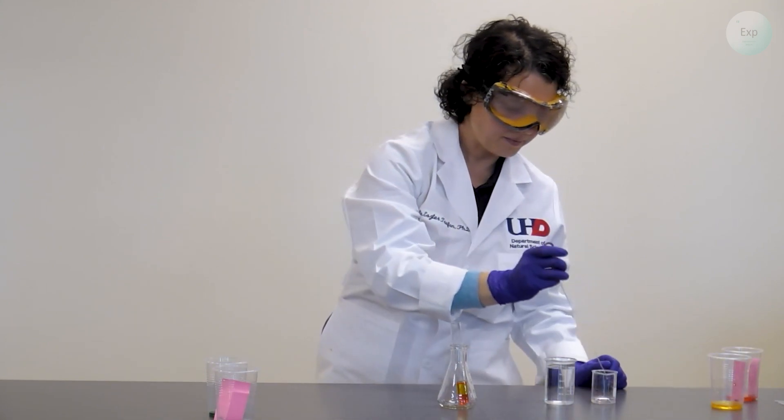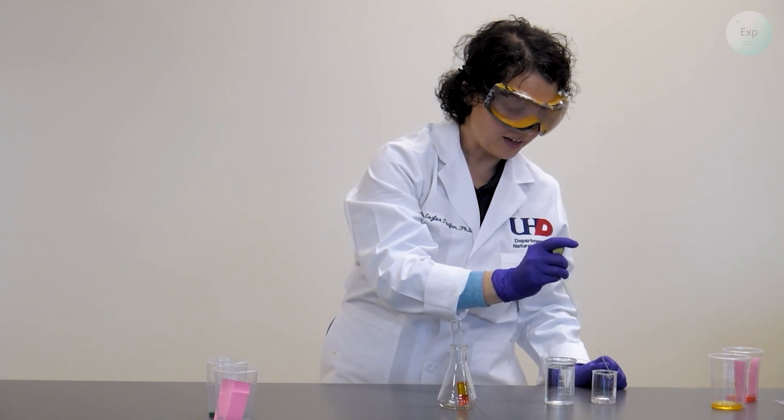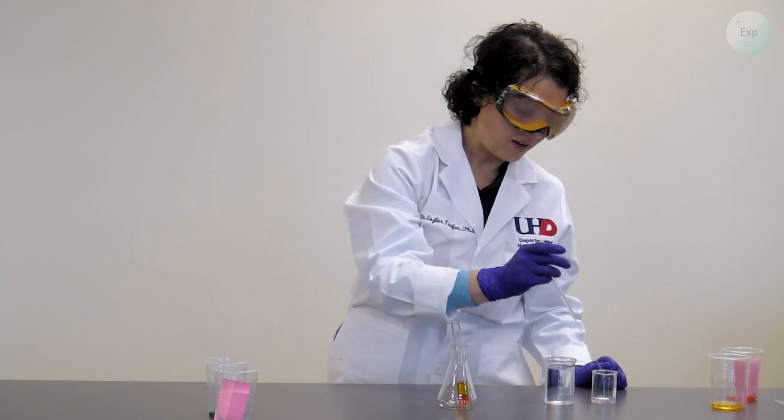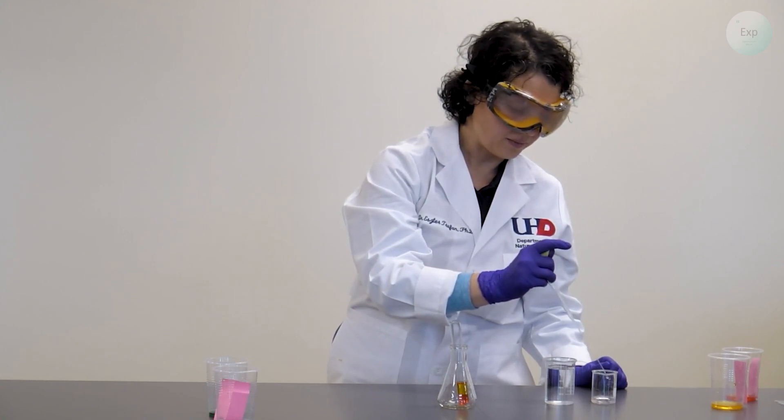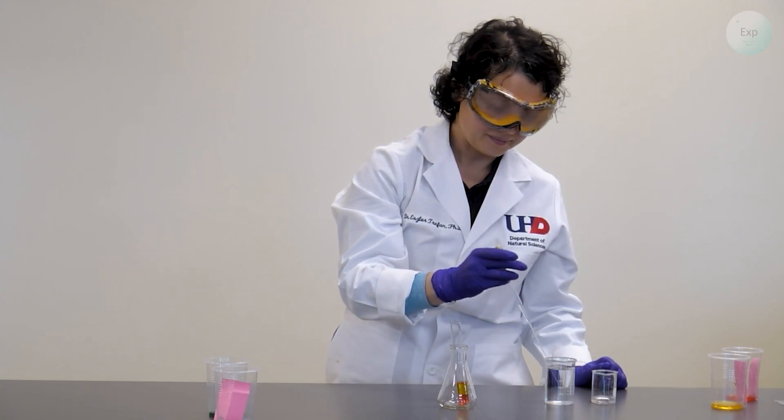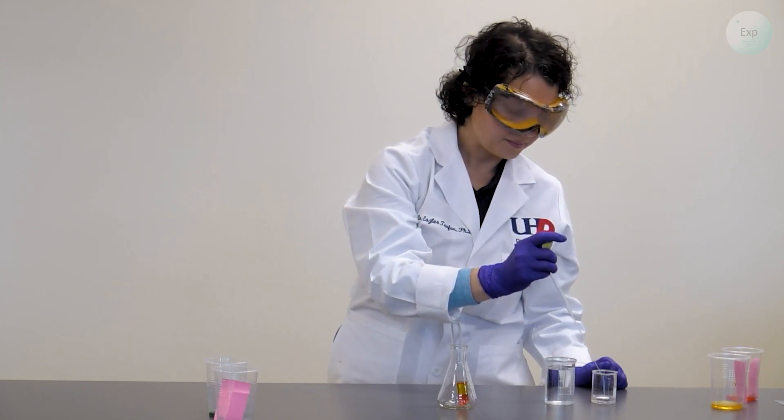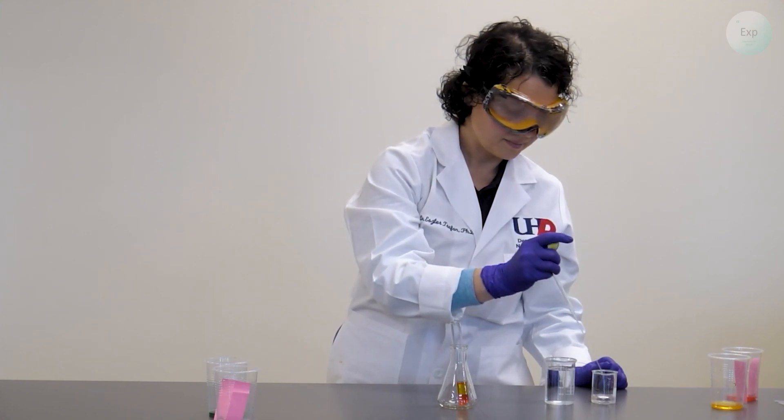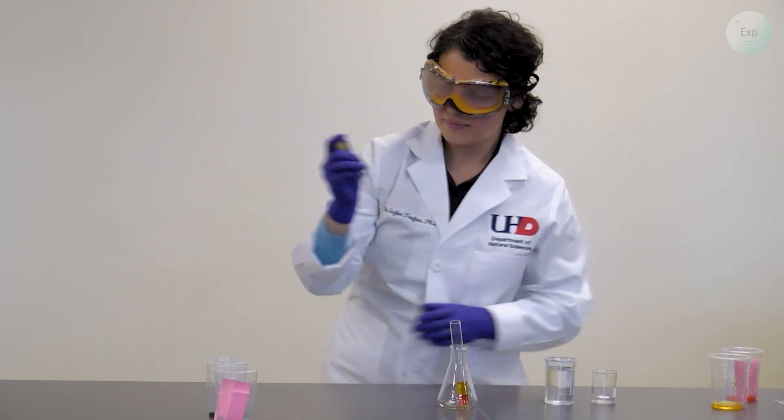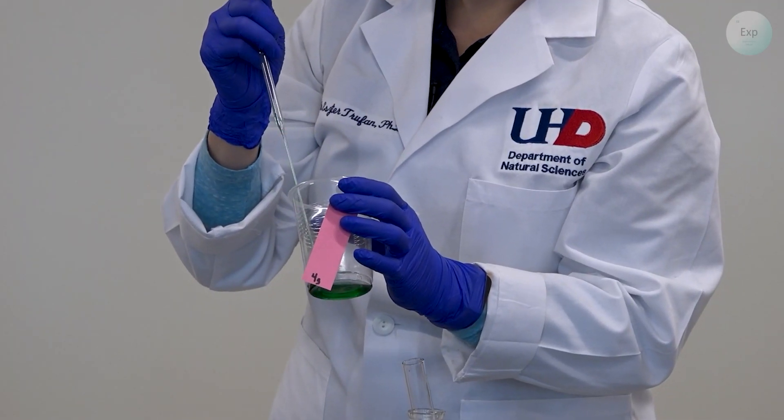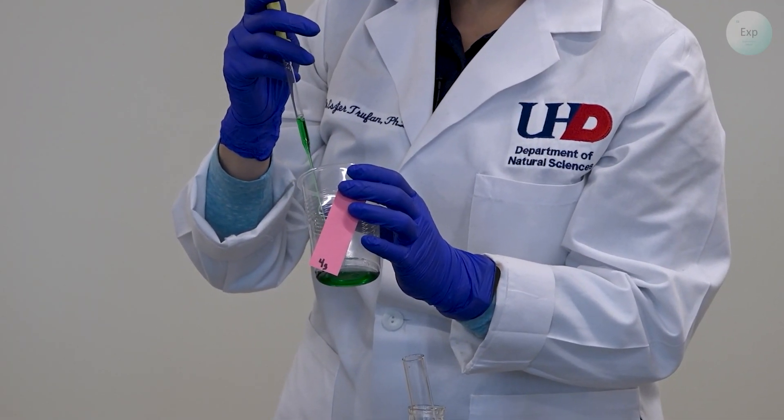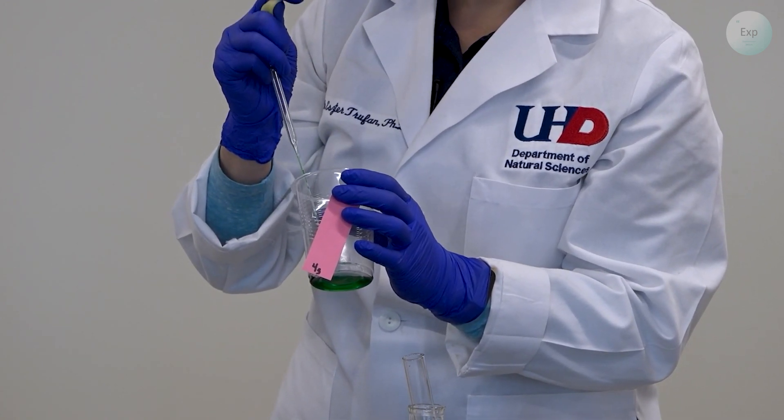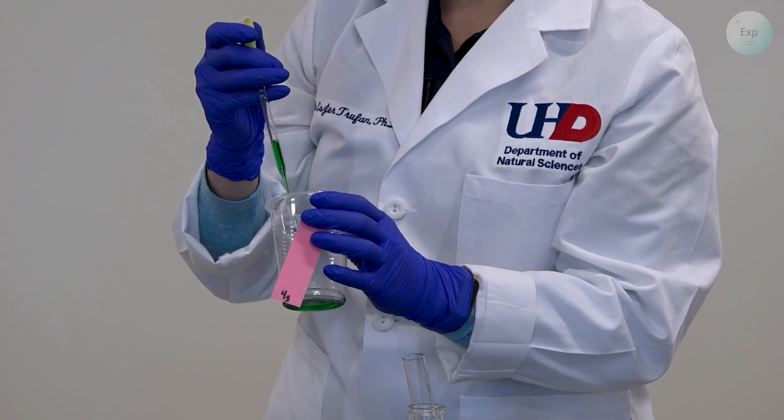Just like before, we need to squeeze out all the yellow solution, pull up some clean water and then transfer it into a waste container or the sink. Next, we rinse the green solution into the pipette and we're ready to do the layering with the green solution.